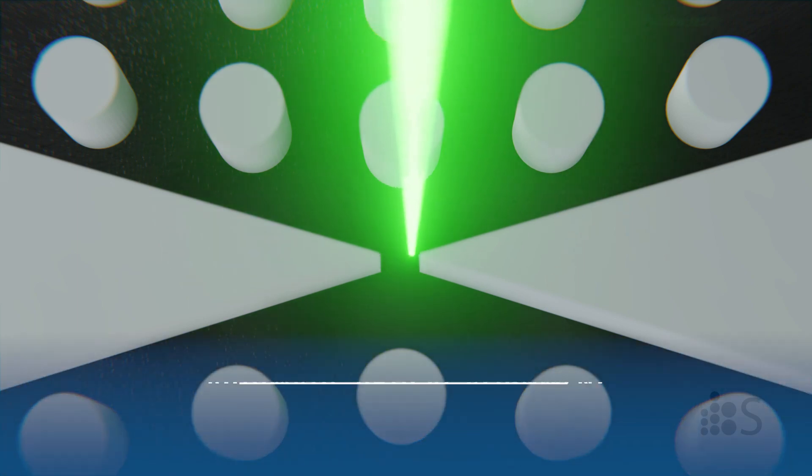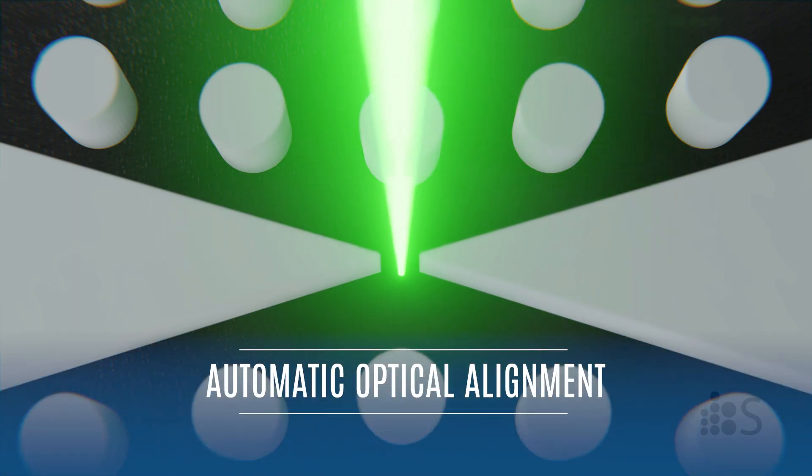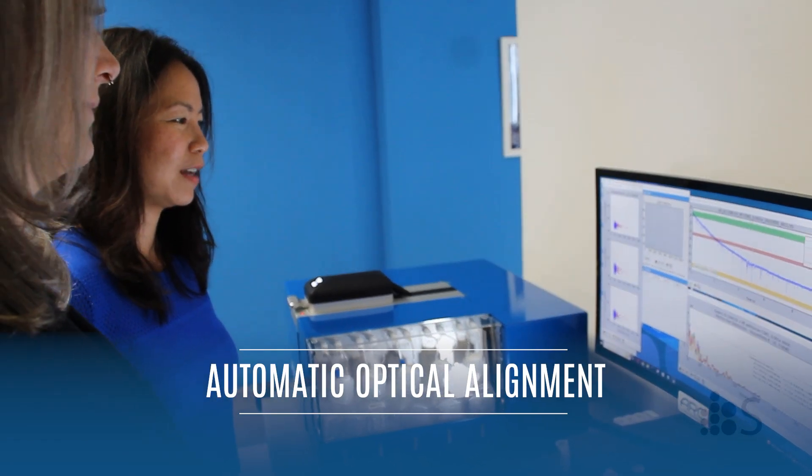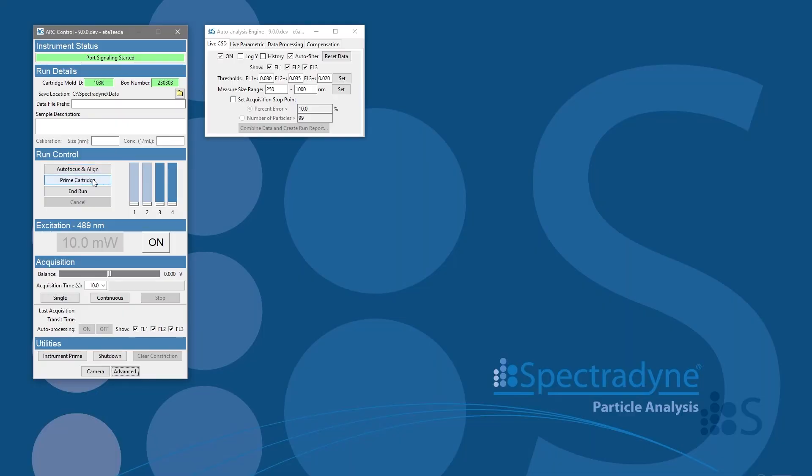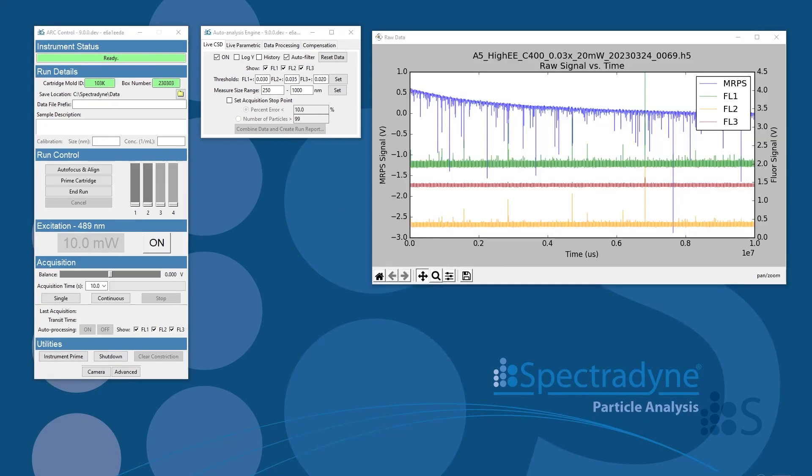A key feature of the arc is that the optics are aligned automatically before every measurement, ensuring repeatable results from run to run. After priming the cartridge for measurement, the data starts coming in in 10-second acquisitions.